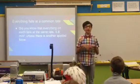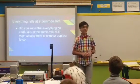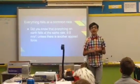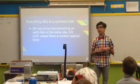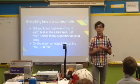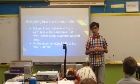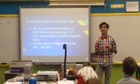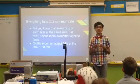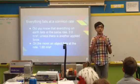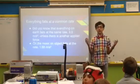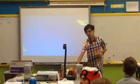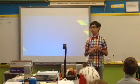Everything on Earth falls at a common rate. That rate is 9.8 meters per second squared, or meters per second per second, unless there's another applying force. On the moon, an object falls at 1.68 meters per second squared because there is less gravity — the moon is smaller. The larger an object is, the stronger the gravitational pull. And the closer you are to the object, the stronger the pull is.